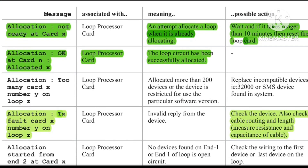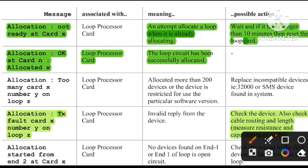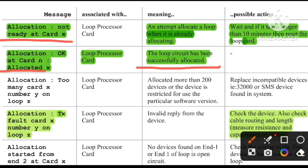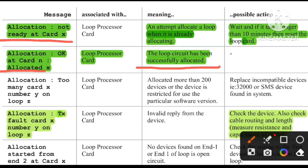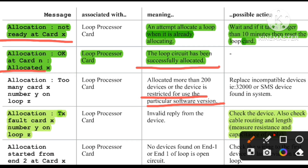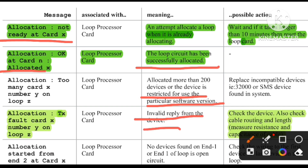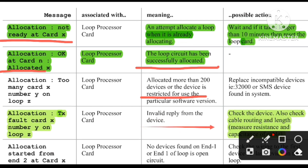Another common fault is 'Allocation not ready at card X' — this means the card has successfully restarted. 'Allocation too many cards' means more than 200 devices are allocated, or the device requires specific software. The most common fault I want to highlight is 'Allocation TX fault' — this means no reply is coming from the device, indicating a loose connection.